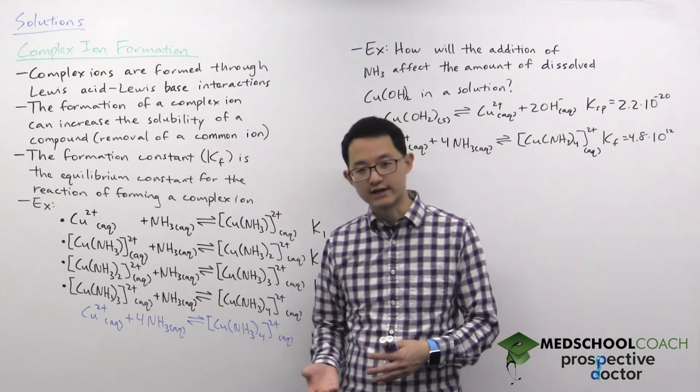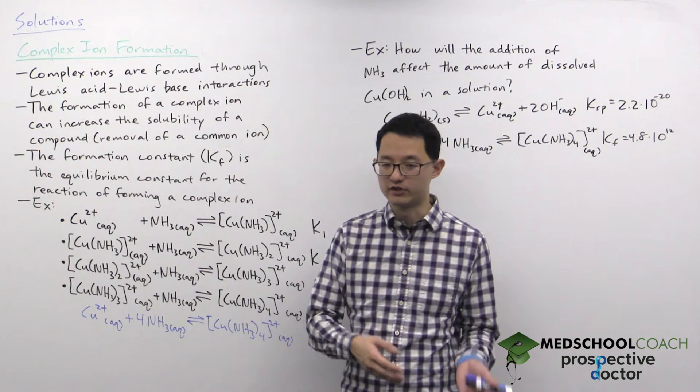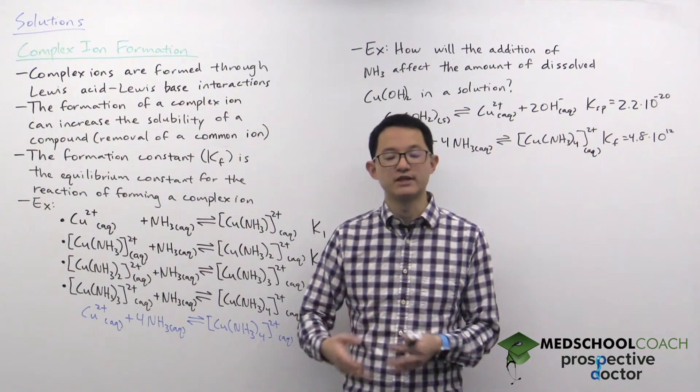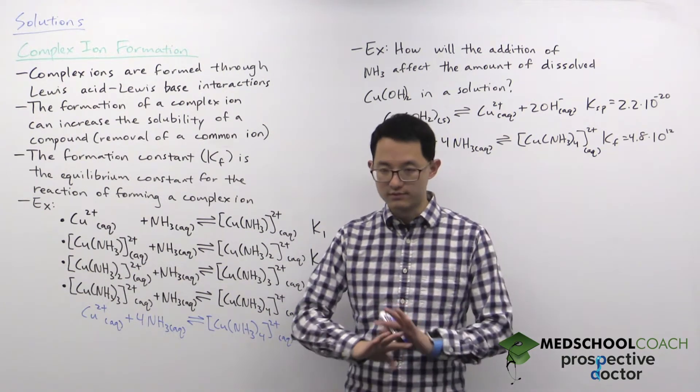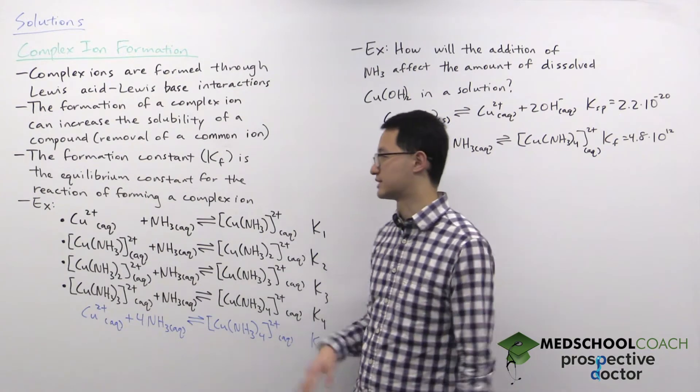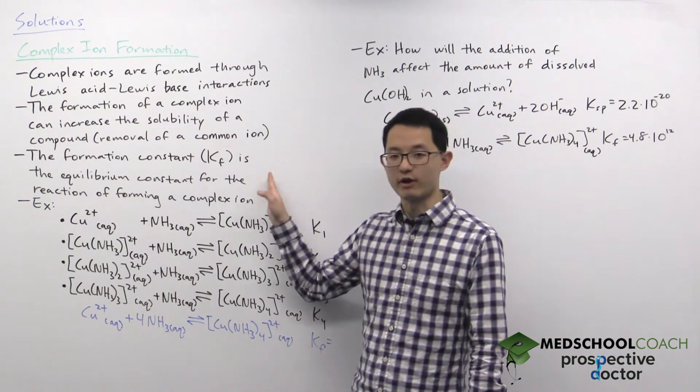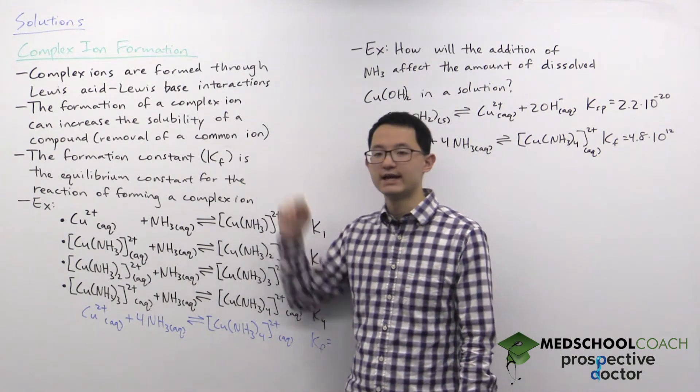It's still products over reactants with stoichiometric coefficients as exponents and solids and liquids are excluded. So the same as any equilibrium constant expression but we just give it a special name, the formation constant Kf.